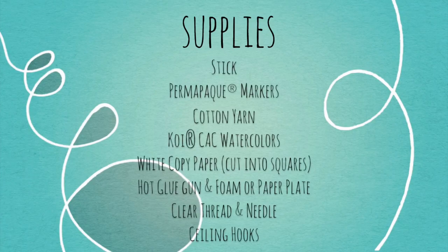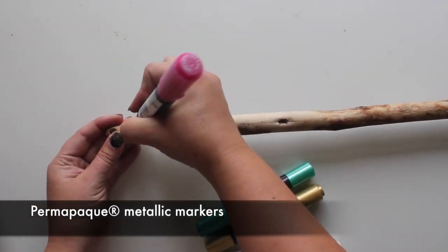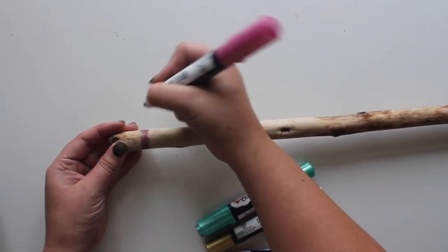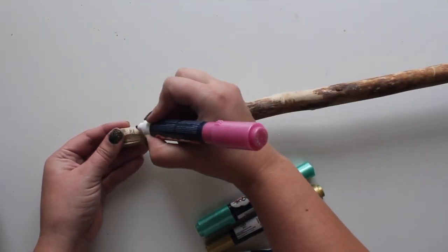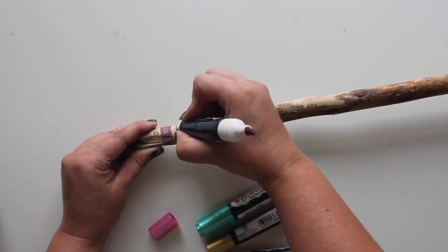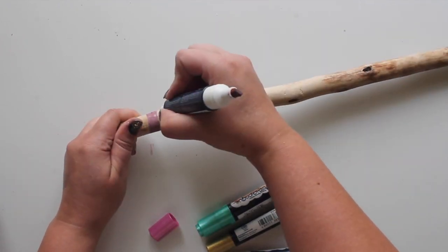I found this weathered stick while I was hiking this summer and wanted to incorporate it into my decor. So I'm going to use metallic Permipake markers to add colorful, shimmery stripes. I prefer to use these pens over paint because it's easy to create both thick and thin lines using the dual point nibs. Plus there's almost no dry time required and it's less messy than paint.